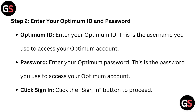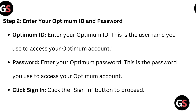Step 2: Enter your Optimum ID and password. Enter your Optimum ID — this is the username you use to access your Optimum account. Enter your Optimum password — this is the password you use to access your Optimum account. Click the Sign In button to proceed.